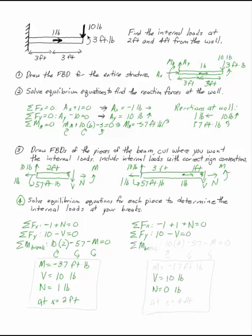If I take the sum of the moments at the break, I have now 10 times 4 feet minus 57 minus m equals 0. The 1 pound load doesn't create a moment at the break, so now I have m is minus 17 foot pounds at x equals 4. So I'll get different answers depending on which value for x I have.